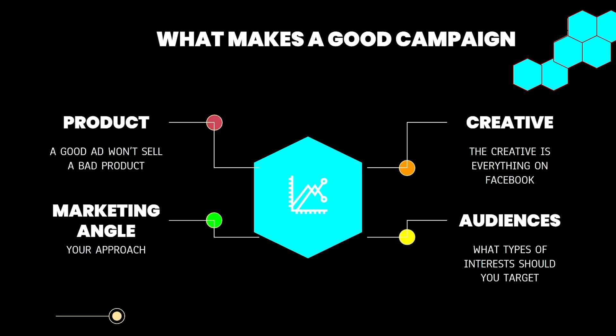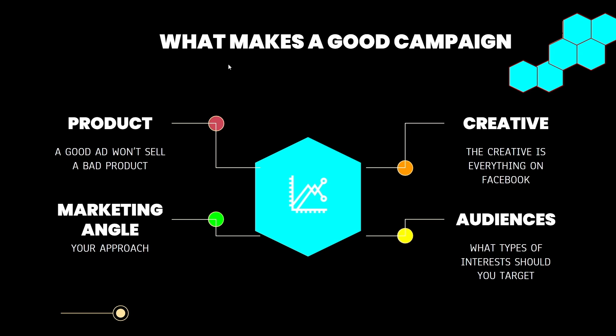Now that we've been through the structure of the Facebook ads manager, we have to talk about what makes a good campaign. A good campaign can be multiple things, but usually it would be sales — or if you're doing lead gen, how many leads you're getting. There are four main key factors to what makes a good campaign. The first one is the product — a good product is what makes you money.